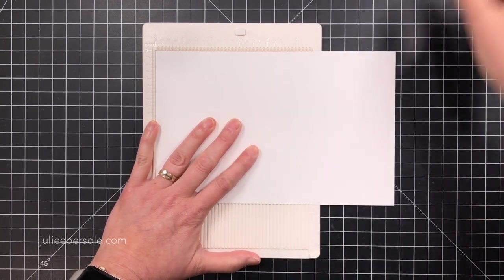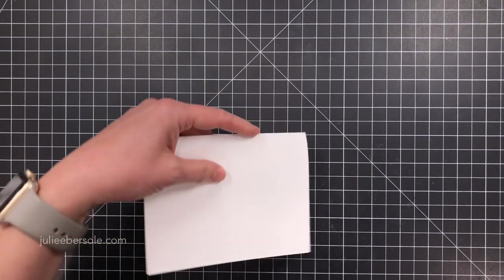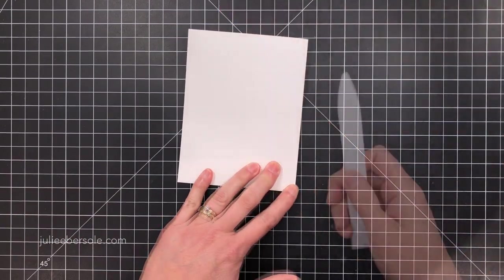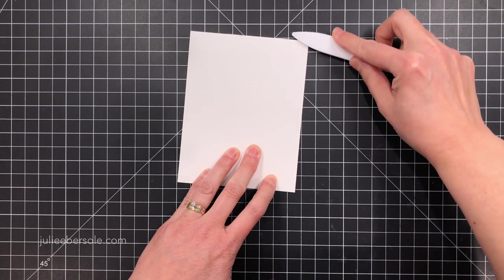I made a base card from some Neenah Solar White, 80 pound, cut it 5½ by 8½ inches and then I'm going to score it at 4¼, and crease the fold line there with my Teflon bone folder.